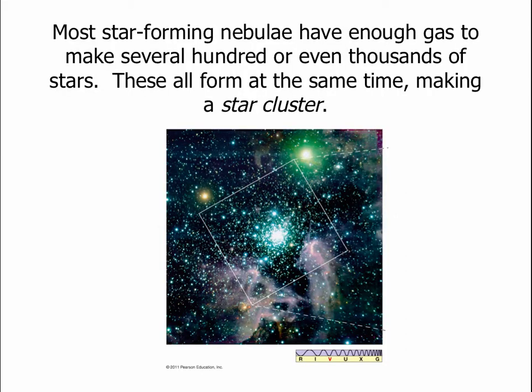Most star-forming nebulae have enough dust and gas to make far more than one star — dozens, hundreds, or even thousands of stars. These stars all form at the same time out of the same cloud of gas, giving us a bunch of young stars together in space. This is what we call a star cluster.